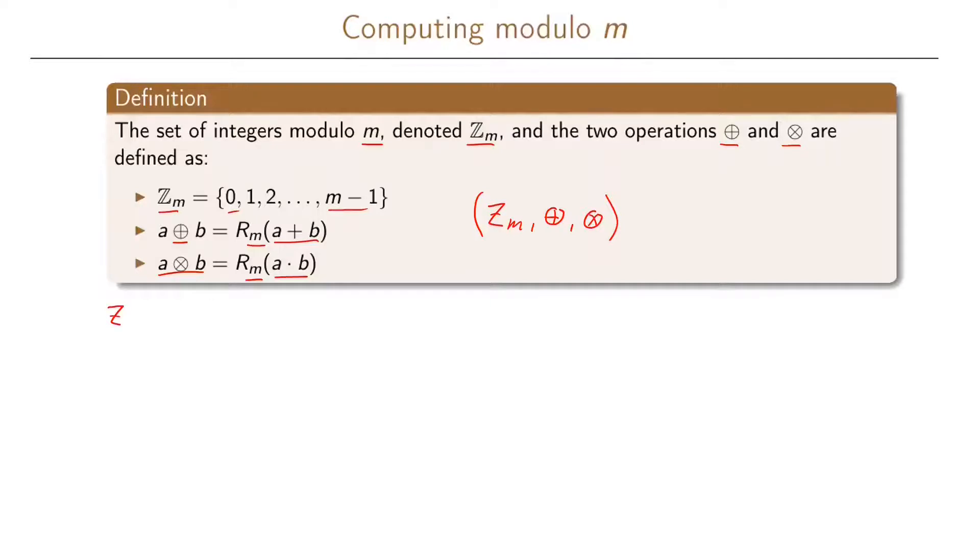So let's look at an example for Z_6 where we have addition modulo 6 and multiplication modulo 6. The set of integers here in Z_6 is the set consisting of 0, 1, 2, 3, 4, and 5.